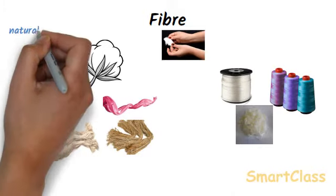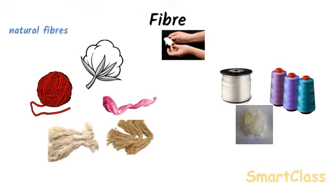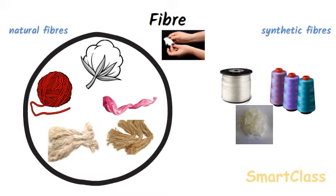Fibers are of two types: natural fibers and synthetic fibers. The fibers which are obtained from natural sources like plants and animals are called natural fibers. Examples include cotton, wool, silk, flax, and jute. Cotton, flax, and jute are natural fibers obtained from plants, whereas wool and silk are natural fibers obtained from animals.